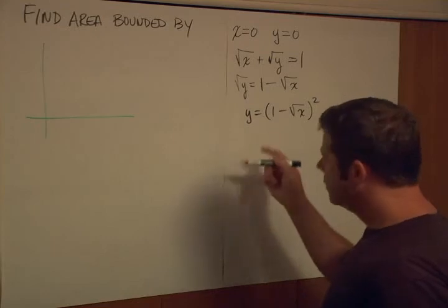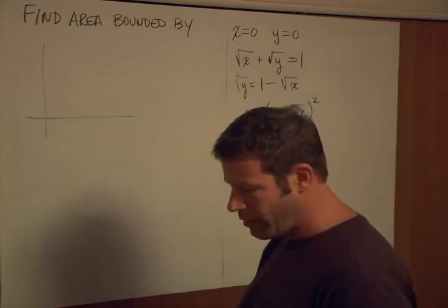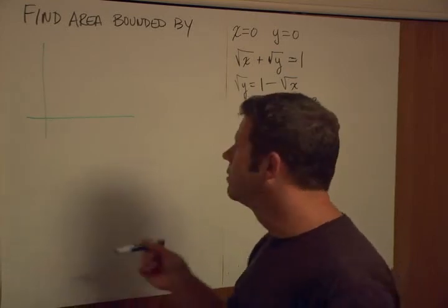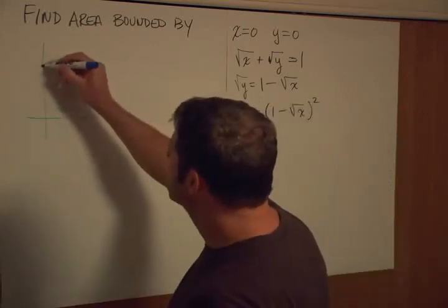So let's try to put in a few points and then try to deduce what it looks like. First off, what's the easiest point to try? Well, x equals zero, and when x equals zero, we have y equals one. So we'll call that right here.